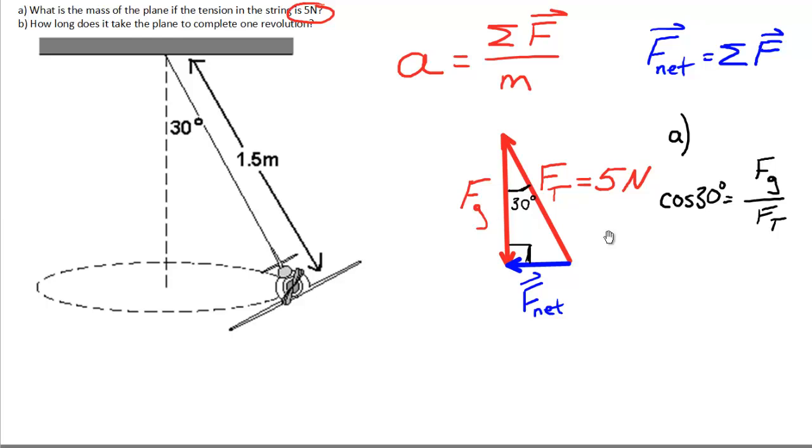And we want to solve this for force of gravity so I can determine the mass of the plane. So simply multiplying both sides by F_t gives me the following. So F_g equals F_t cos 30.